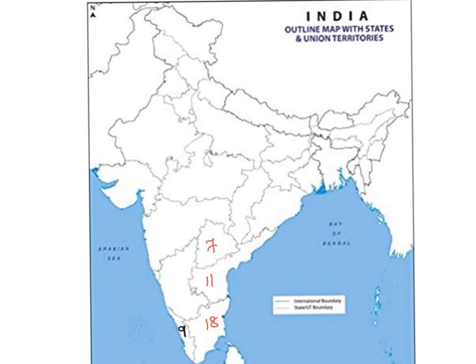Add 1 to Andhra Pradesh's 11 seats and it will become 12, which means 12 seats are allocated to Karnataka. Add the seats of Karnataka (12) and Telangana (7) and it will become 19 seats for Maharashtra. Remember that there are 11 seats for Andhra Pradesh.